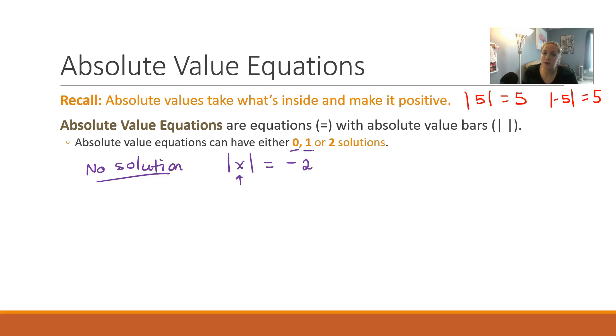There's only one instance where you're going to have one solution, and that is absolute value of x equals 0. What are the possibilities for x? The only thing that's going to work is 0, because there's no positive or negative 0, it's simply 0.